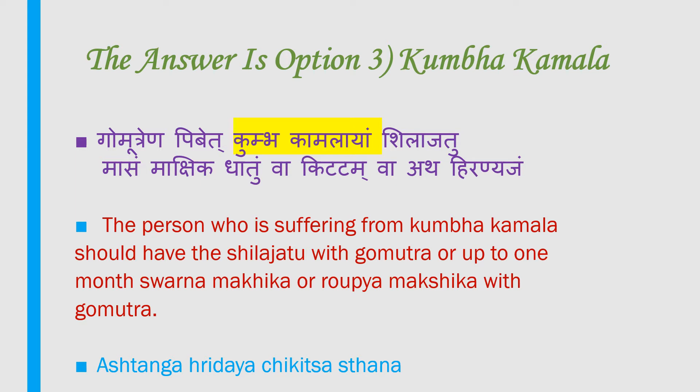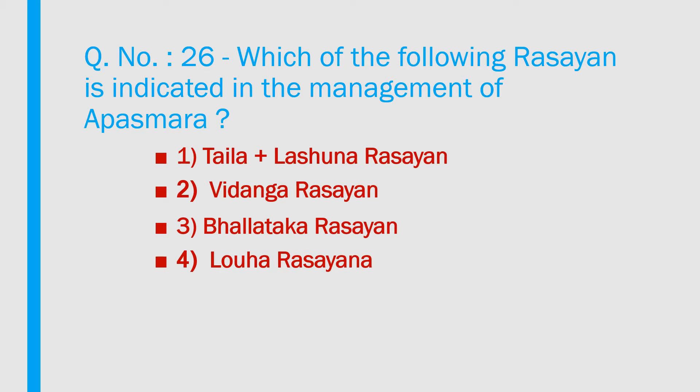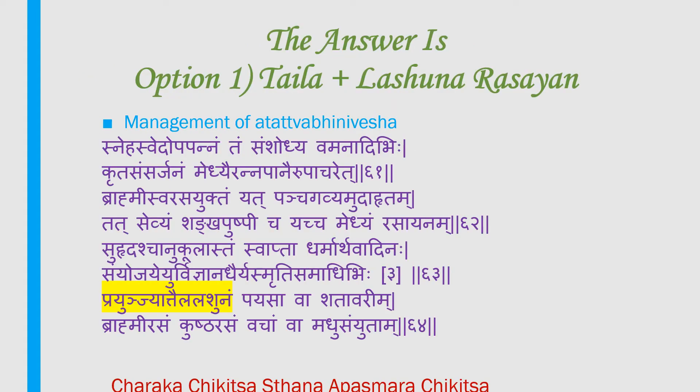Question number 26: Which of the following rasayana is indicated in the management of abasmara? 1) Thaila plus leshuna rasayana, 2) Vidanga rasayana, 3) Balladaga rasayana, 4) Lauha rasayana. Answer is option 1 — Thaila plus leshuna rasayana. The management includes sneha sveda, shodhana by vamana and other procedures, followed by rasayana with brahmi swarasa, shankhapushpi, taila lashunam, payasa, brahmi rasam, kushta rasam, and vajam with madhu. Reference: Charaka Chigilsa Sthana, Abasmara chigilsa.